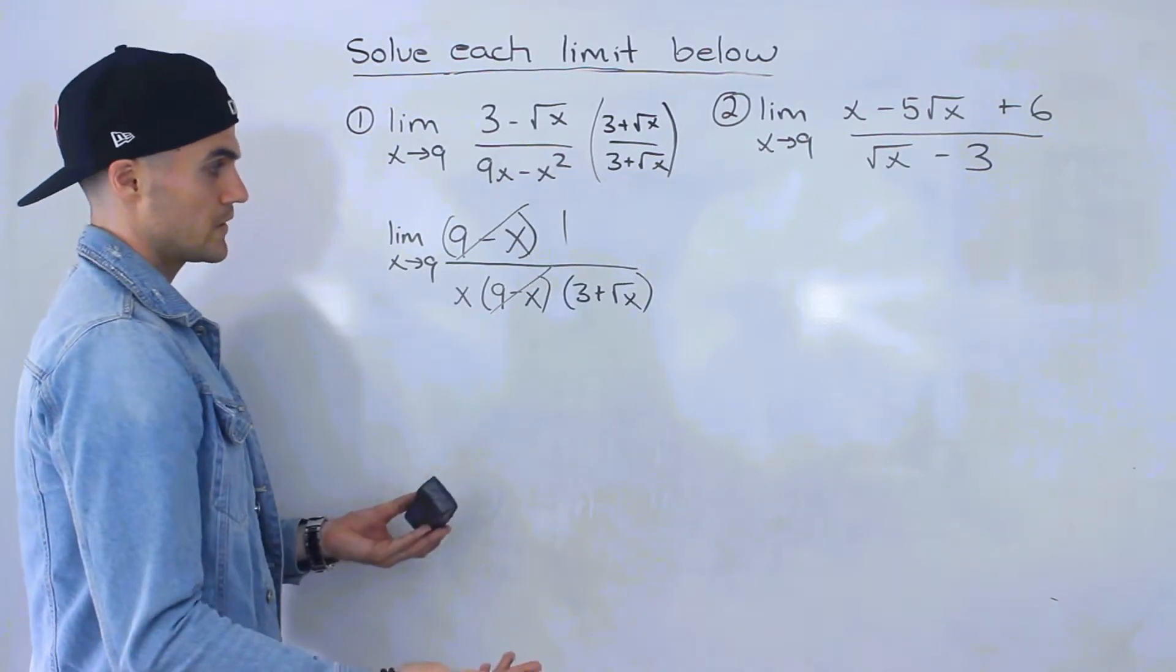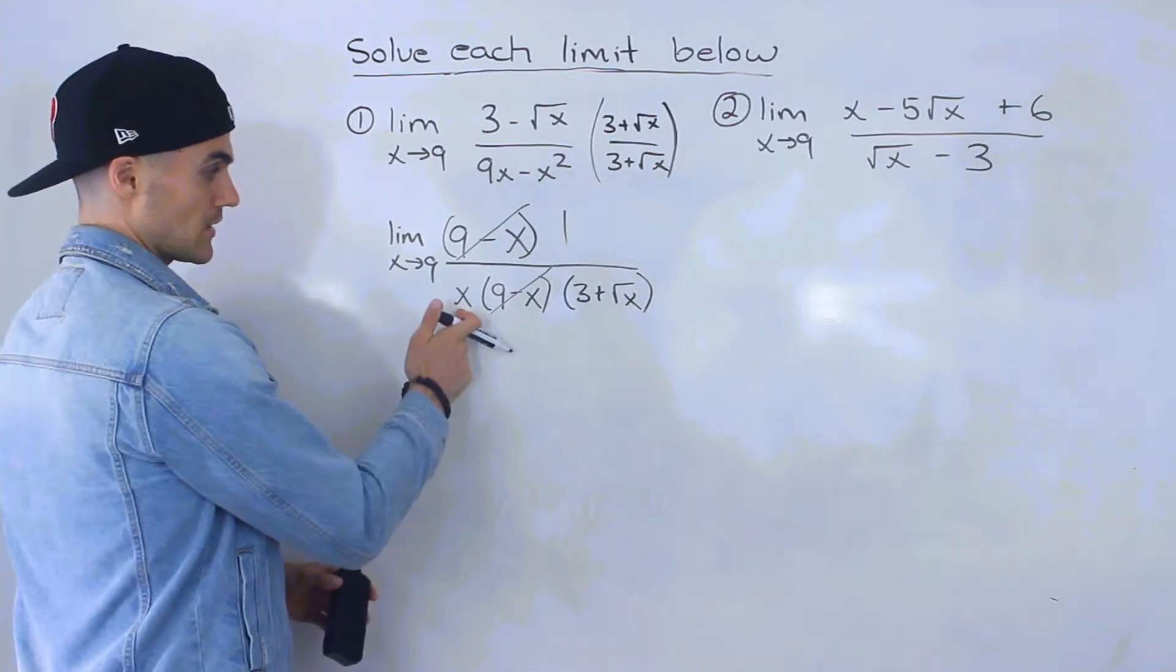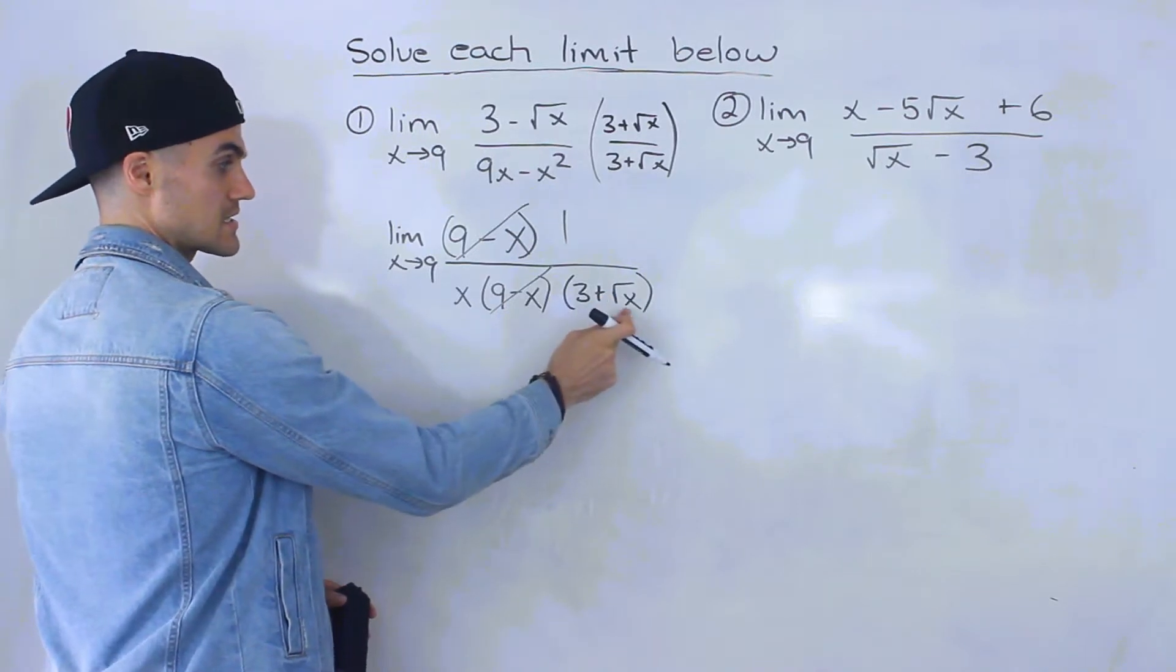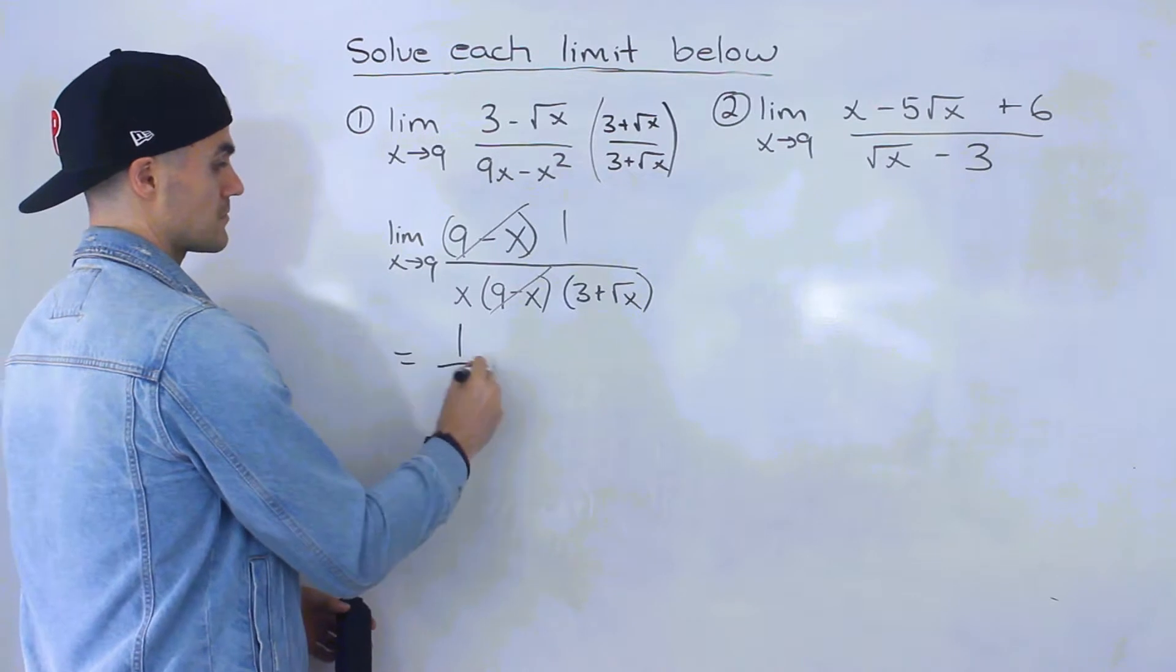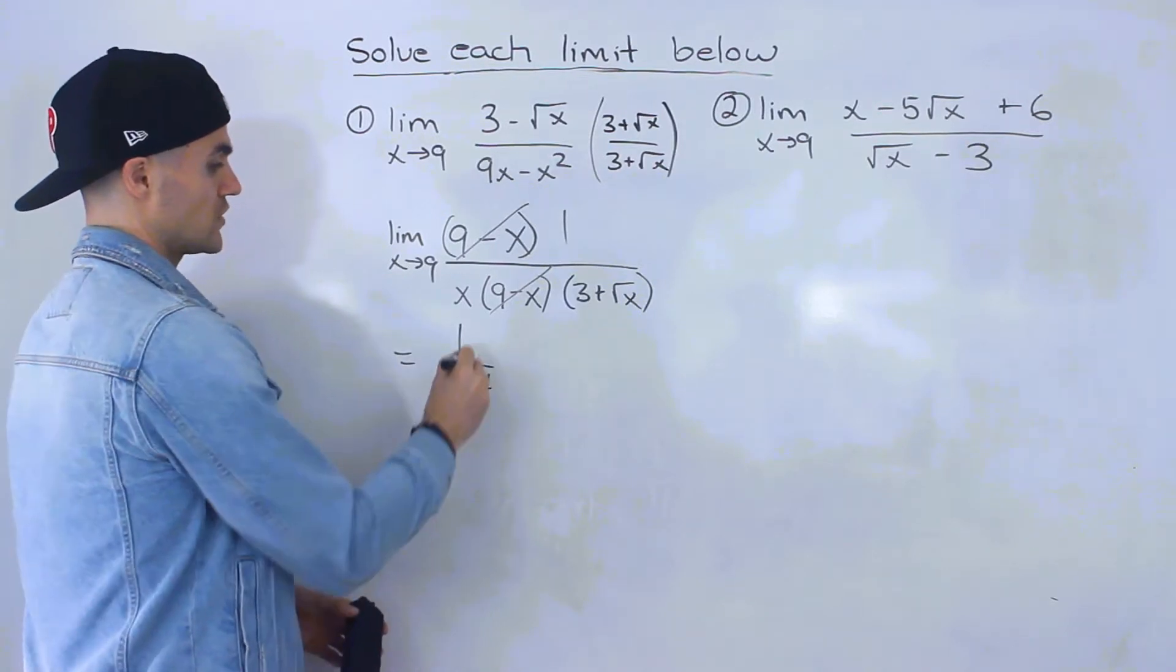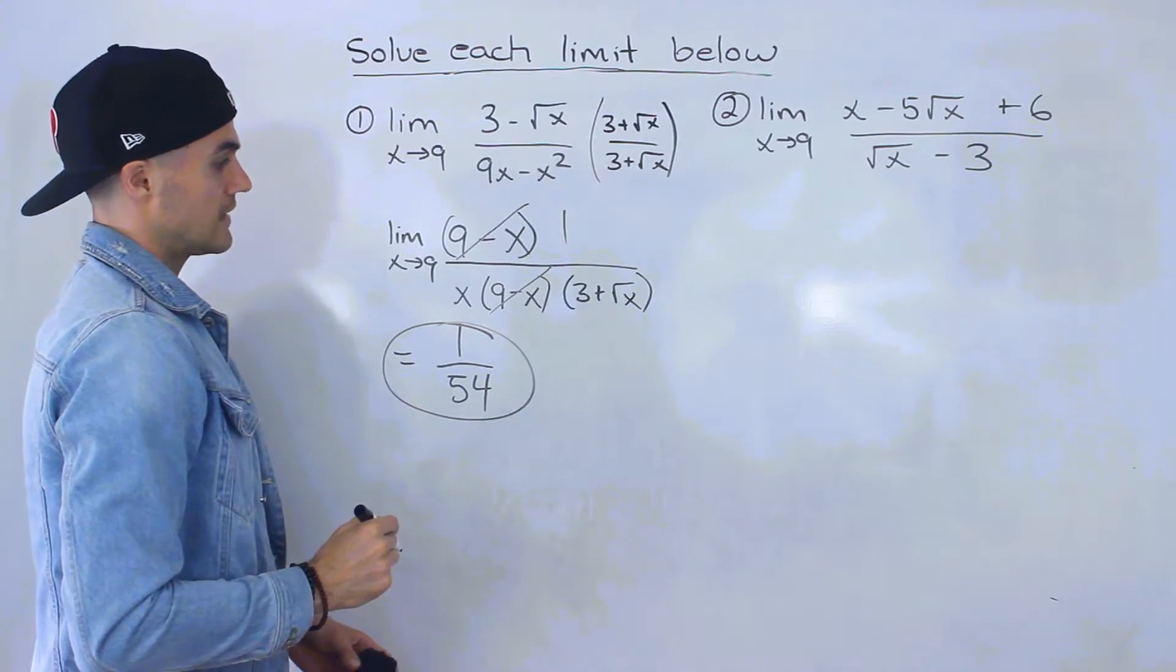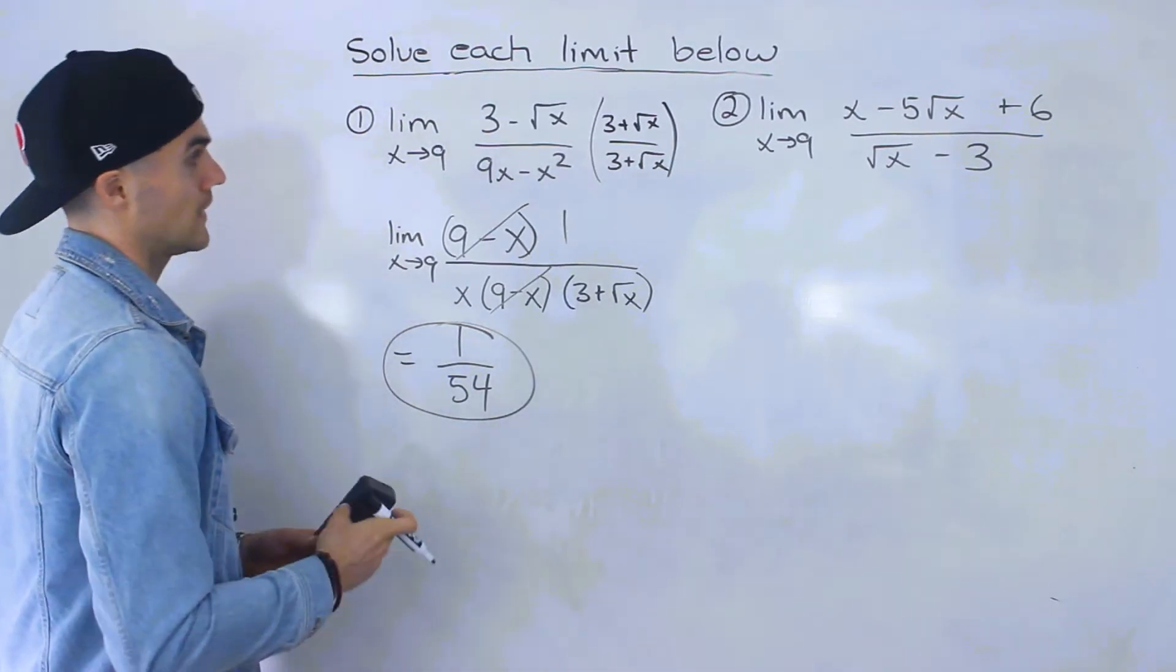Now we can plug in 9. This would be 9, this would be the square root of 9, which is 3. 3 plus 3 is 6. 6 times 9 is 54. So the answer is 1 over 54. That's the rationalization way, not too bad at all.